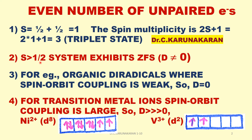For S > 1/2 spin systems, they exhibit zero field splitting. Since S=1 is greater than 1/2, it exhibits zero field splitting, meaning D ≠ 0. For organic diradicals with two unpaired electrons where spin-orbit coupling is weak, D ≈ 0. On the other hand, for transition metal ions the spin-orbit coupling is very large, therefore D is much greater than zero.